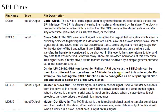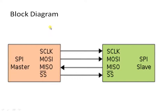Let us see the block diagram of this SPI. As you can see, this is a master and this is a slave. The master has generated the clock, and that clock is given as input to the slave device. As both are operating with the same frequency, both will operate at the same speed. If any changes occur in the master's clock during transmission, those same changes are reflected at the slave side, so there is no loss of data in synchronous communication.